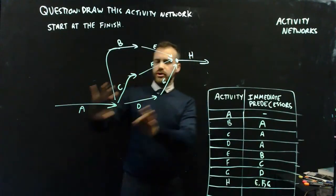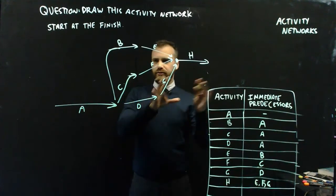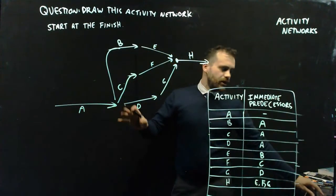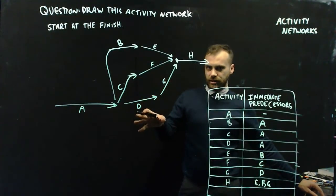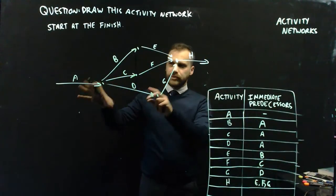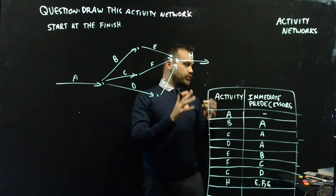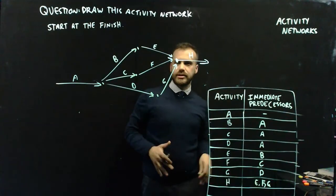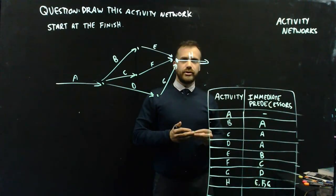If you start at the finish and work your way back, you shouldn't have too much problem. You can sort of start at the front, but I find it easier to work that way. I don't really love how that network looks. I think it would look better if I just tidy it up a bit so the lines are straight and they're kind of leading to the right place. That is activity networks. We've looked at precedence tables, worked one way, worked the other way. That's a pretty good go.